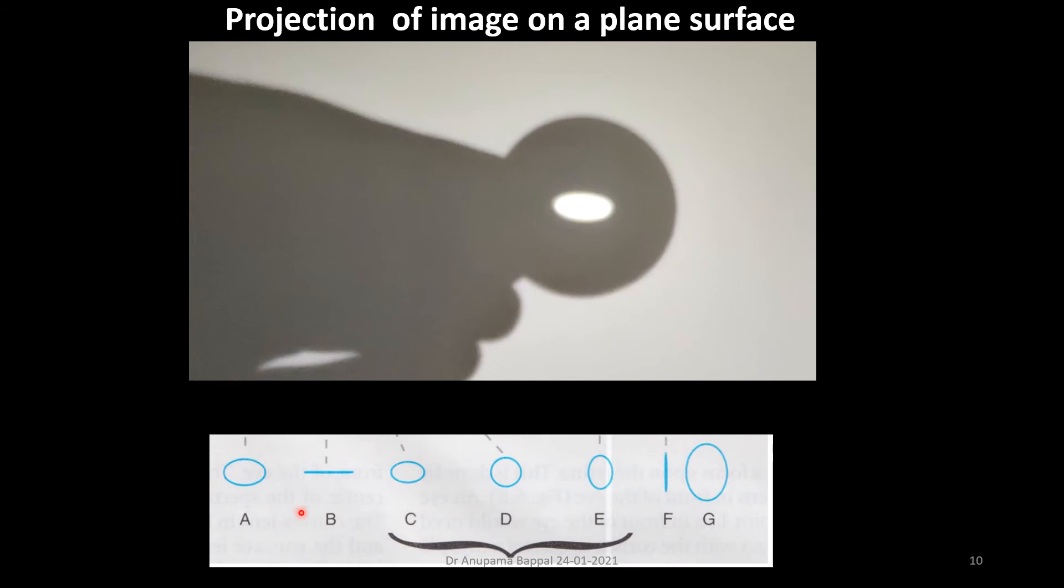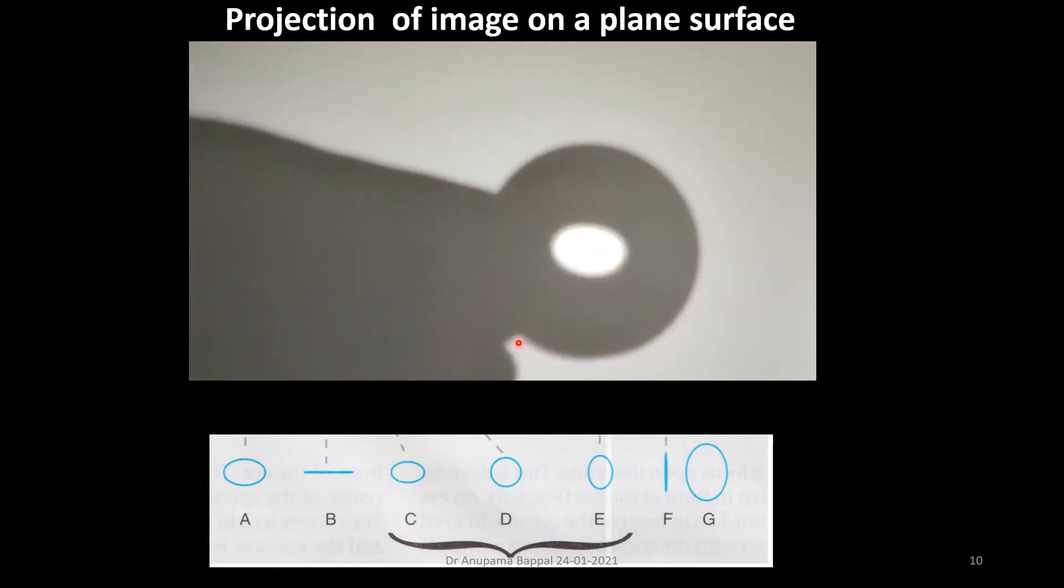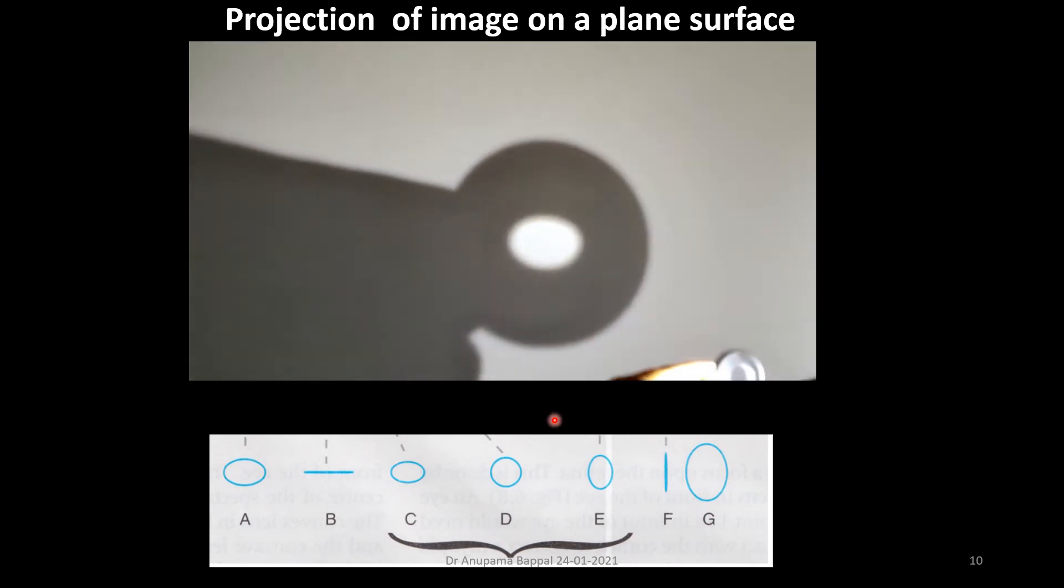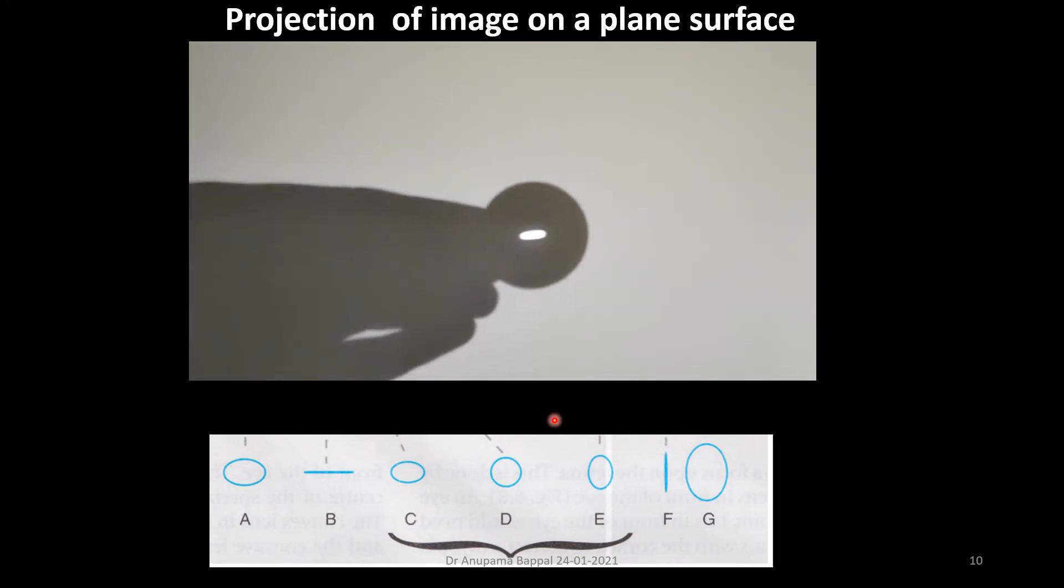So to repeat again, let's see how we can demonstrate. You can see that we have captured the image on the screen just by using the stacked lens and a mobile source of light. You can see exactly it just looks like the image at F.